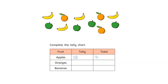My next row: oranges. Let's count together how many oranges there are. One, two, three. So how many tally lines am I going to draw? Let's count together: one, two, three tally lines. Well done. And my total is three.